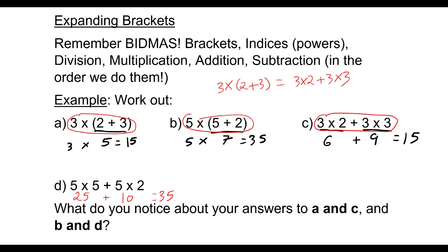Similarly, our answer to B was 35, and so was our answer to D. This means that 5 times 5 plus 2 in a bracket is identical to 5 times 5 plus 5 times 2.